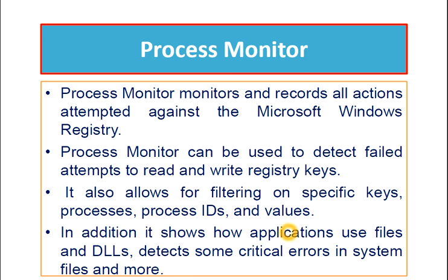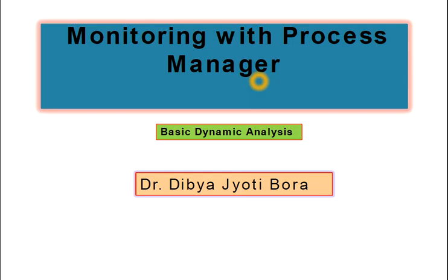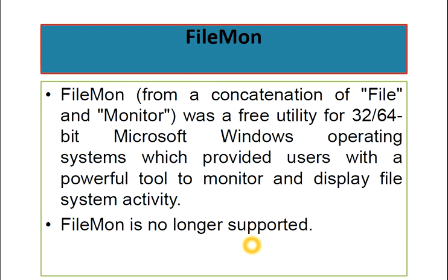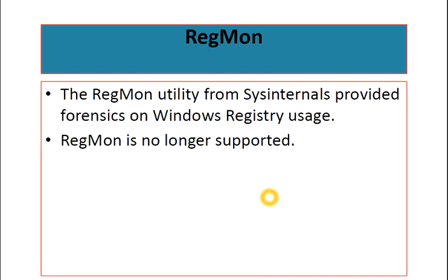Some serious tasks can be monitored or performed through process monitor. Filemon — a concatenation of File and Monitor — was a free utility for 32/64-bit Microsoft Windows that provided users a powerful tool to monitor and display file system activity, but it is no longer supported. Similarly, Regmon from Sysinternals provided forensics on Windows registry uses, and is also no longer supported.